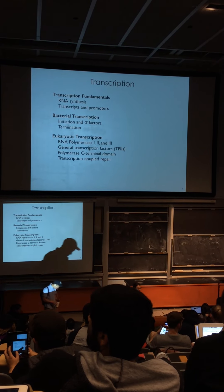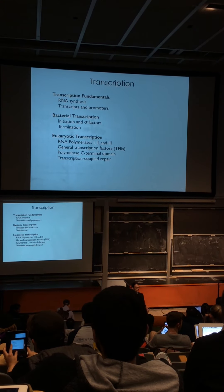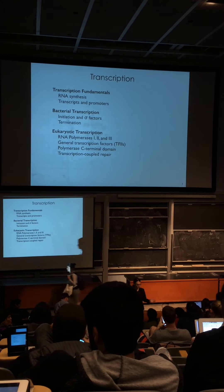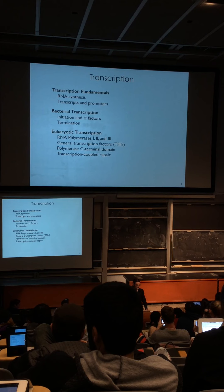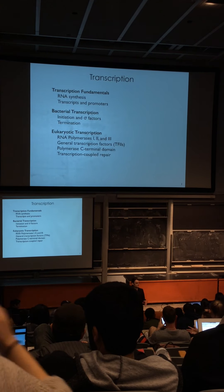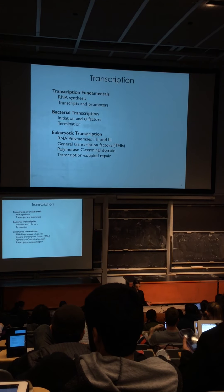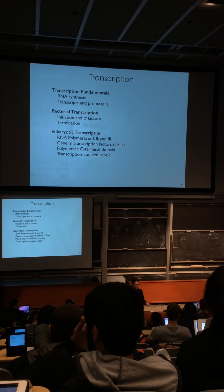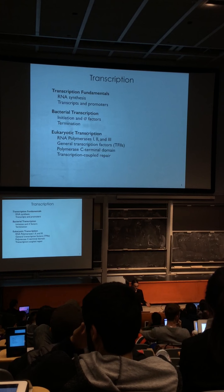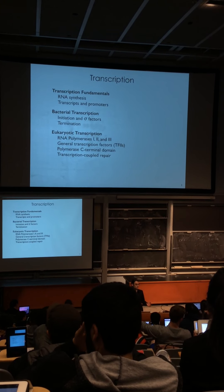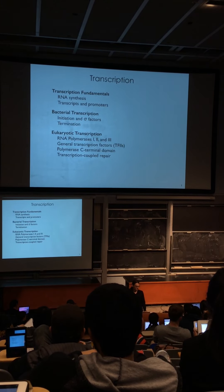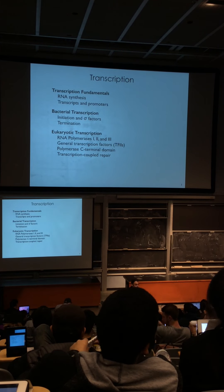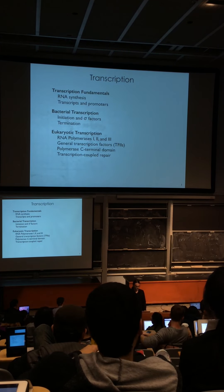We're going to talk about the first step in using genetic information: the process of transcription. We'll start by discussing the fundamentals of transcription—the parts that are the same in every organism—then move on to discuss bacterial-specific processes of transcription, which were the first we understood, and then discuss the eukaryotic transcriptional apparatus.